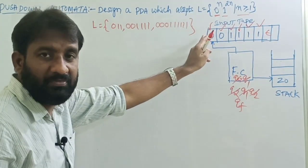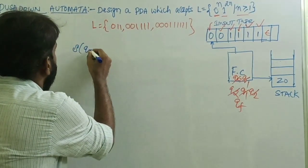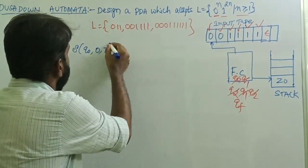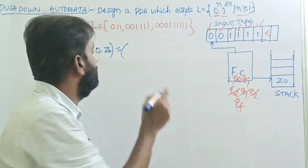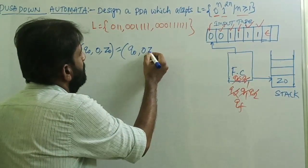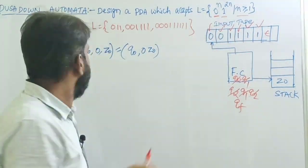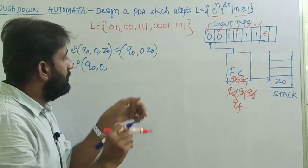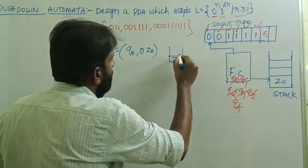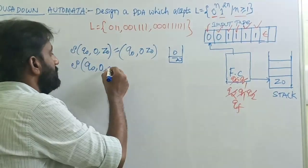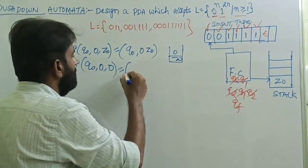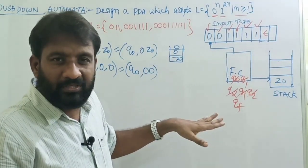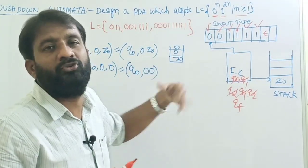Now write the transitions formally. State q0, input symbol zero, top of stack is Z₀ — remain in q0 and push zero: δ(q0, 0, Z₀) = (q0, 0Z₀). Next, δ(q0, 0, 0) — top of stack is now zero — add zero onto the stack, remain in same state: δ(q0, 0, 0) = (q0, 00). If more zeros follow, continue pushing all zeros in state q0.